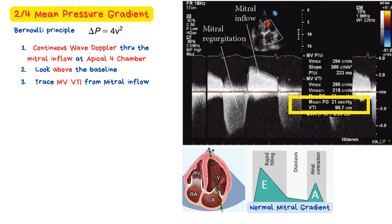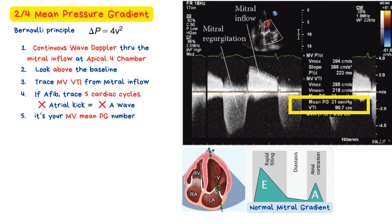It's also important to report the heart rate, since gradient measurements are flow-dependent. Now, if your patient is in atrial fibrillation — which is often a consequence of mitral stenosis — you'll want to average 5 cardiac cycles due to the irregular rhythm. Remember, in AFib there's no coordinated atrial contraction, so you won't see an A-wave on the Doppler tracing, just a series of irregular passive flow patterns.